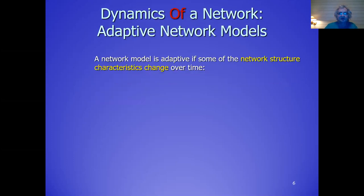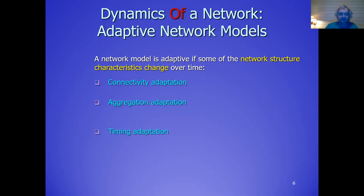That's the dynamics within networks, but you can also consider dynamics of networks. That means that the network structure characteristics — the connection weights, for example, but also other ones — can also change over time. So then you have three types of characteristics: the connectivity characteristics, aggregation characteristics, and timing characteristics.